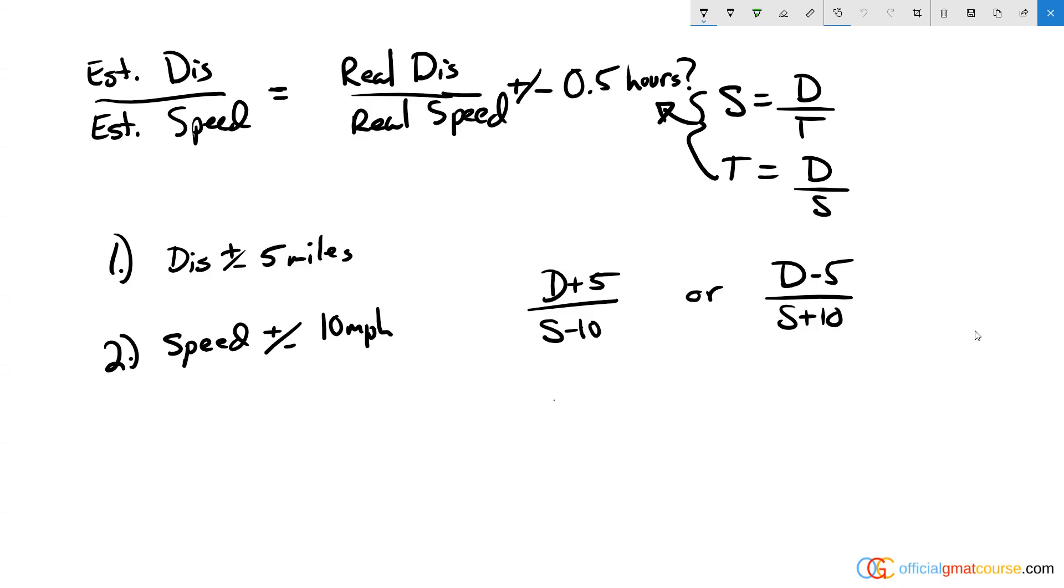This can be a really tricky question, so I want to outline it like this: we have the estimated distance over the estimated speed, and we're asking is that within 0.5 hours, either up or down, plus or minus, of the real distance over the real speed.